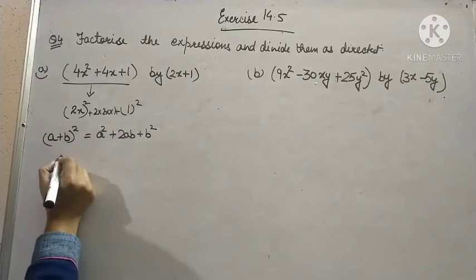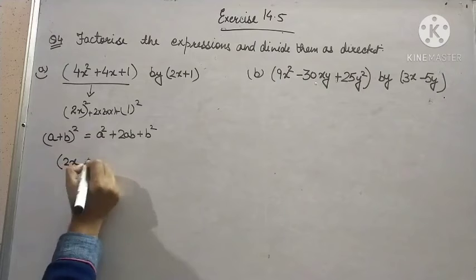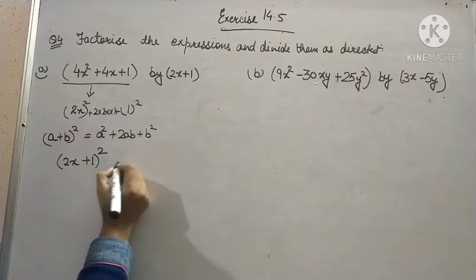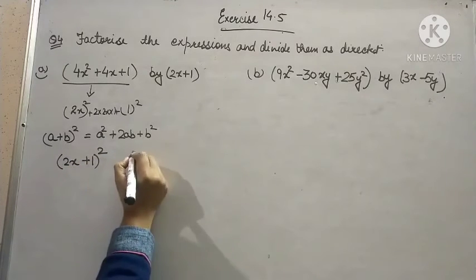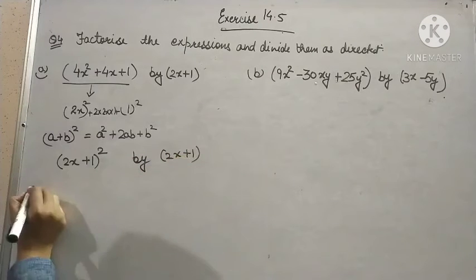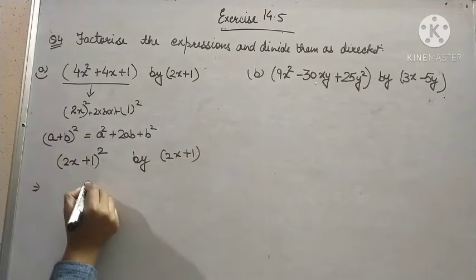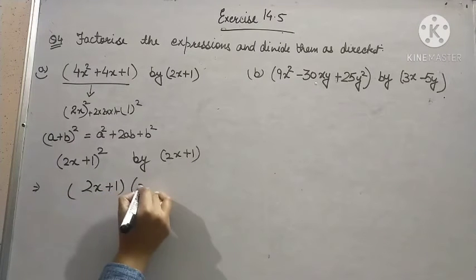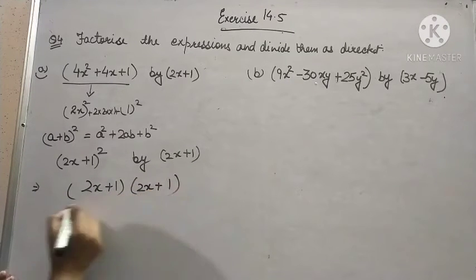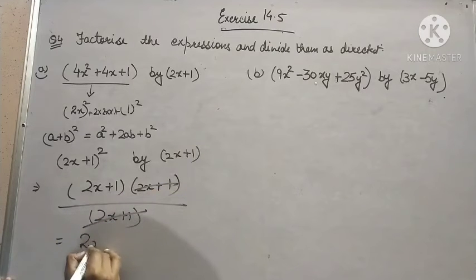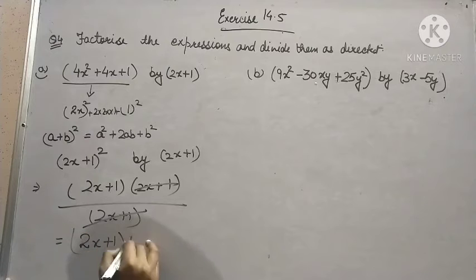So, we will obtain it as 2x plus 1 whole square, and it is to be divided by 2x plus 1. Now, 2x plus 1 whole square can be written as 2x plus 1 into 2x plus 1. And it is to be divided by 2x plus 1. So, we will cancel it. The final answer will be 2x plus 1.